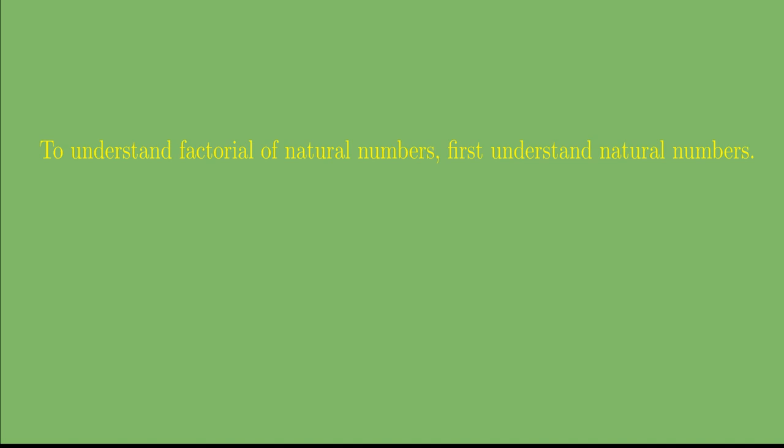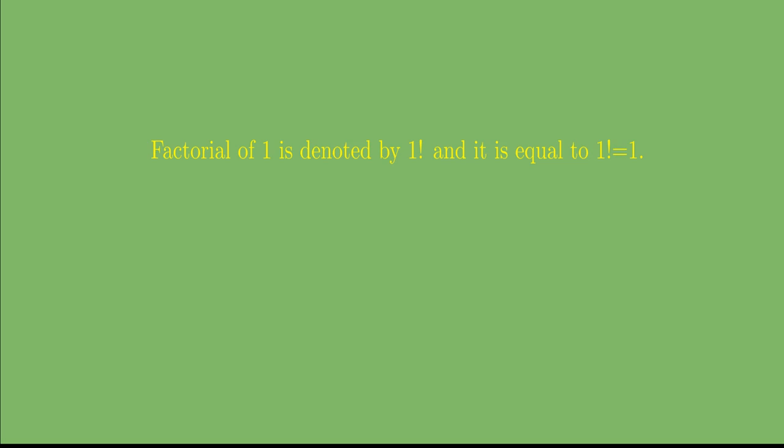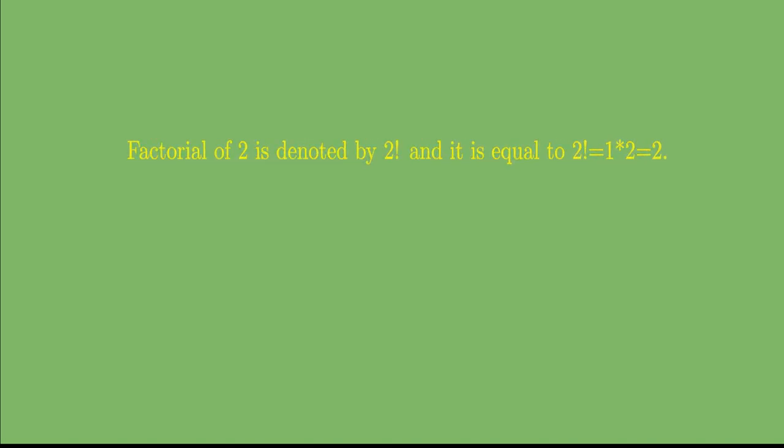To understand the factorial of a natural number, first understand what a natural number is. The set of natural numbers is denoted by capital N, and it is positive whole numbers without zero. Examples: 1, 2, 3, 4, 5, 6, and so on.